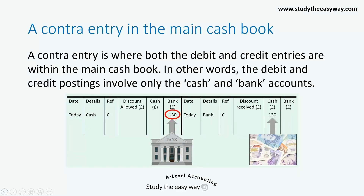In this example, the bank account is being debited, meaning that the amount of money in the bank is being increased, and the cash account is being credited, meaning that there is now less cash in the business.